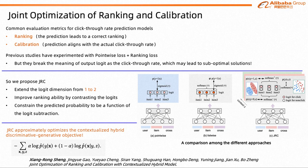Experiments on public and industrial datasets, and also on A/B testing, validate JRC's ability to improve both ranking and calibration abilities.